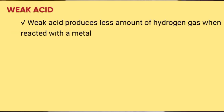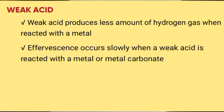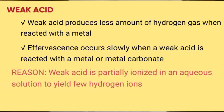Weak acid produces less amount of hydrogen gas when reacted with a metal, or produces less amount of carbon dioxide when reacted with a metal carbonate, because a weak acid is partially ionized in aqueous solution to yield few hydrogen ions.